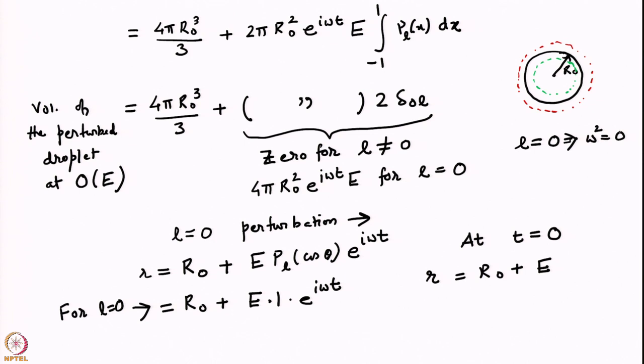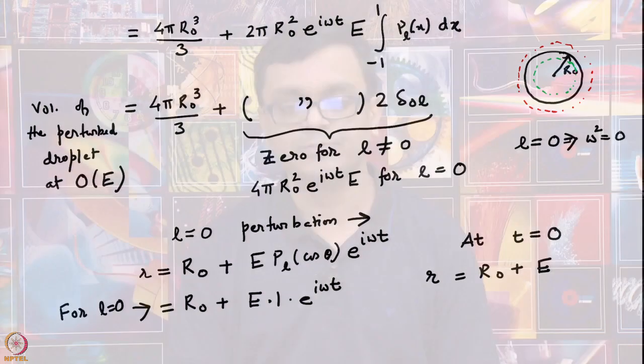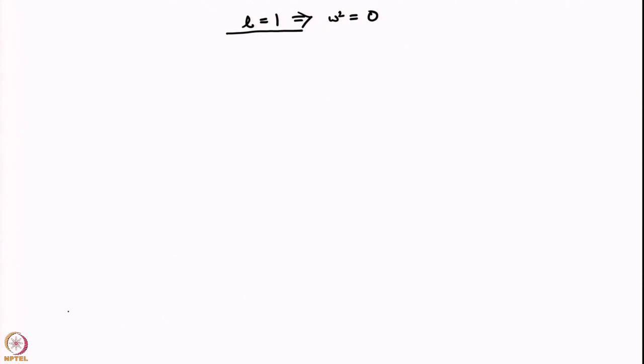This mode of deformation — pure radial expansion or contraction — is very relevant for oscillations of bubbles, where the compressibility of the gaseous medium inside plays a role and the bubble oscillates in a pure radial mode. However, those are volume oscillations; here we are looking at shape oscillations. So this explains why L=0 gives you a zero frequency. What about L=1? Let us understand that.